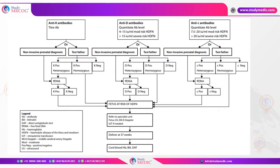Anti-K antibodies can cause severe hydrops even at low levels, so whenever anti-K is detected at any titre, refer for fetal medicine evaluation. For anti-D: beyond 4 IU/mL refer for fetal medicine evaluation — between 4 to 15 IU/mL there is moderate risk of HDFN, and beyond 15 IU/mL there is severe risk. For anti-C: beyond 7.5 IU/mL refer for fetal medicine evaluation — between 7.5 to 20 there is moderate risk, and beyond 20 there is severe risk.